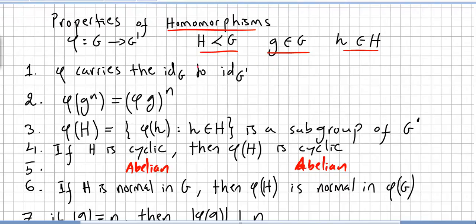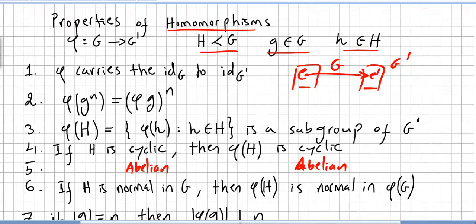First property: phi carries the identity of G to the identity of G-prime. A homomorphism will always carry the identity to the identity. Second property: phi of g to the power of n equals phi of g to the power of n, meaning phi of g1 times g2 times g3 equals phi of g1 times phi of g2 times phi of g3.